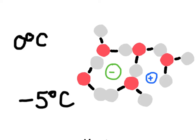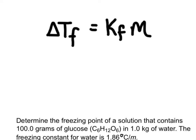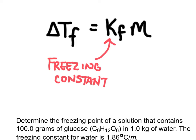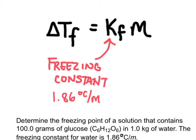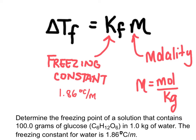We can calculate the freezing point depression using this equation: the change in freezing point equals the freezing point constant times the molality. The freezing constant is specific to the type of solvent — for water it's 1.86 degrees Celsius per molal. M refers to the concentration of the solute, which is molality: moles of solute per kilogram of solvent. Let's go ahead and use this equation to solve a problem.